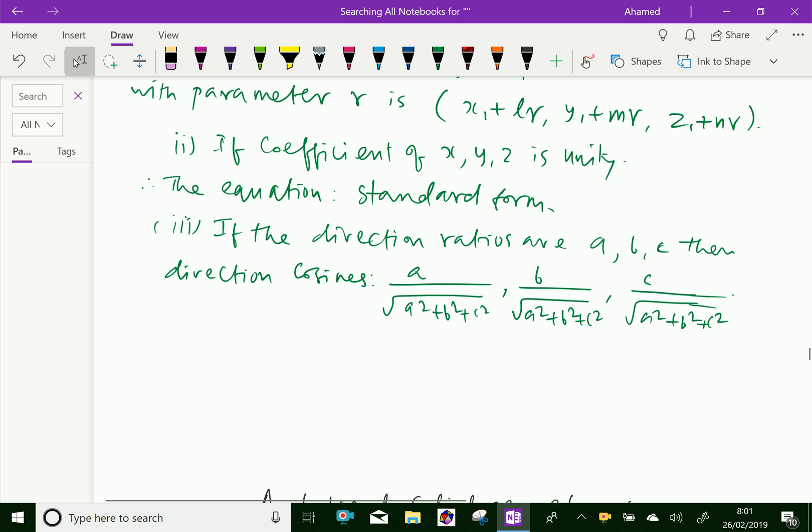Then symmetrical form of the given line can be written as X minus X1 by A, Y minus Y1 by B, Z minus Z1 by C.